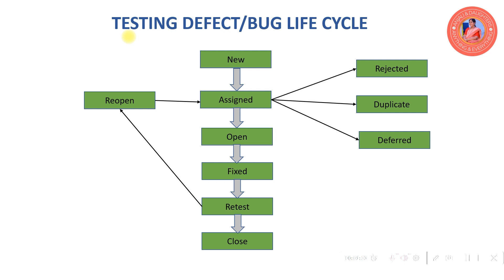This is a standard defect life cycle. The statuses are: new, assign, open, fixed, retest, close, reopen, reject, duplicate, and deferred.